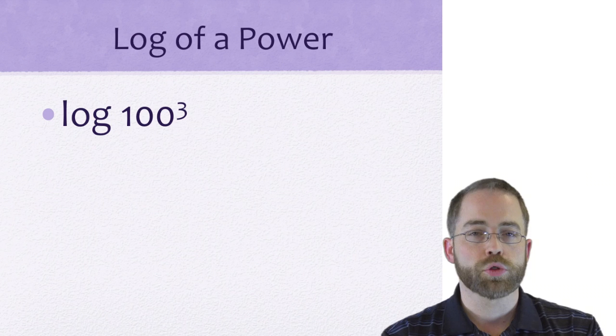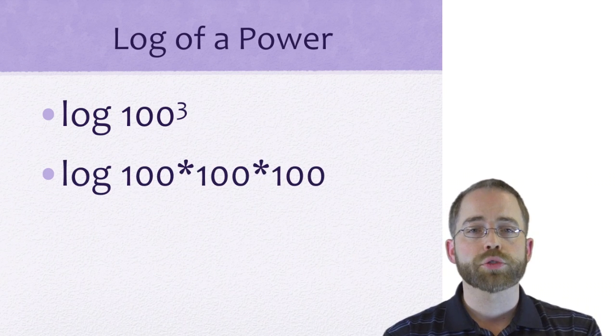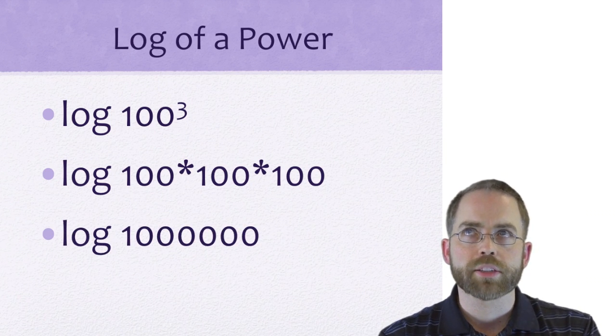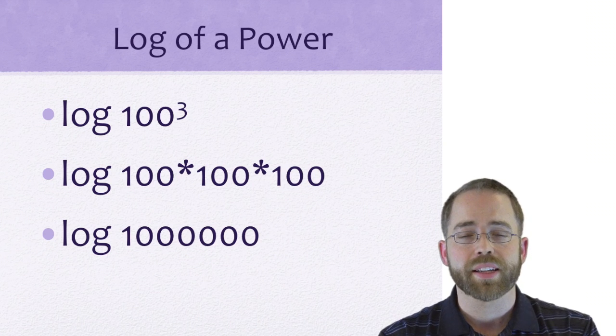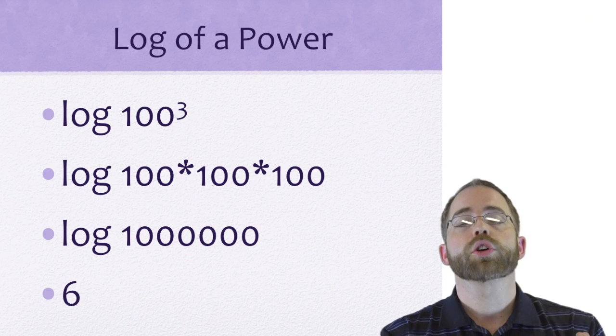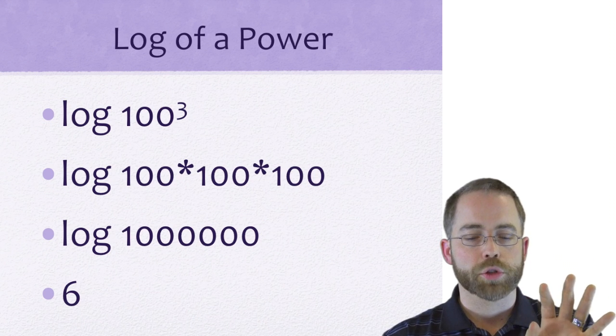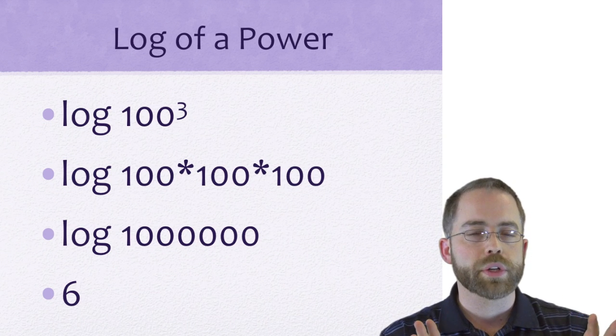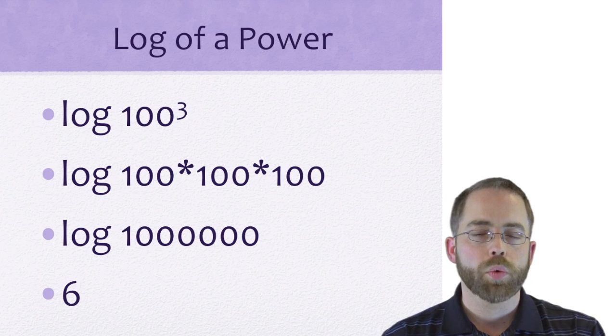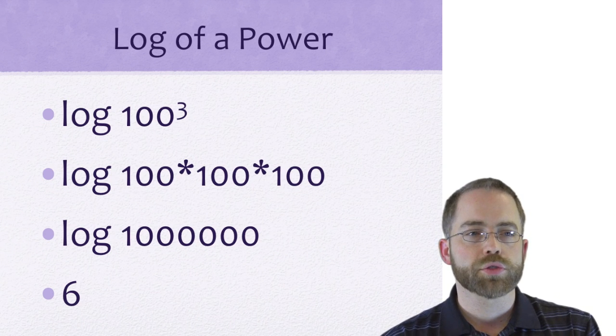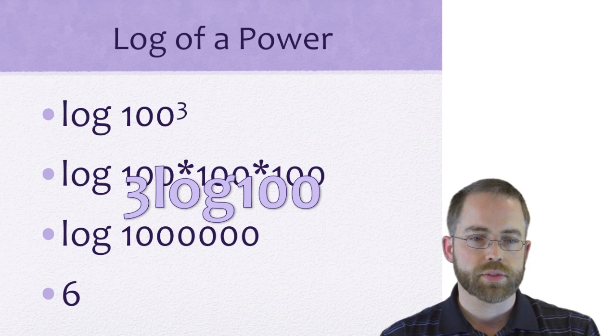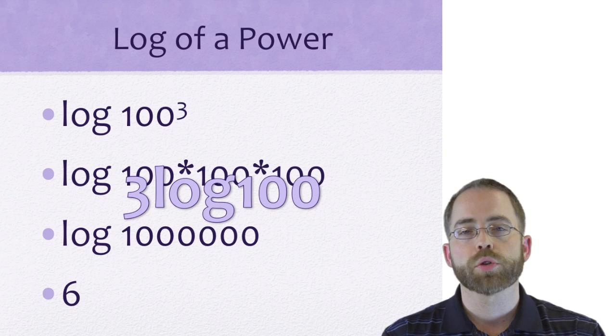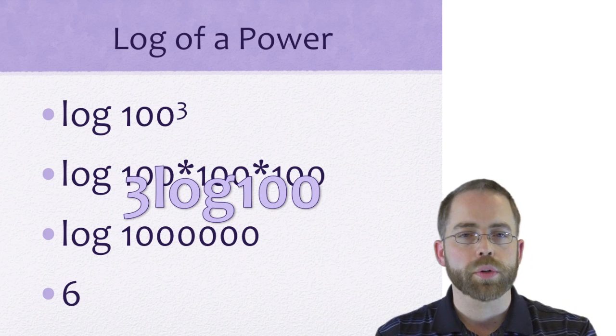All the properties of exponents that you know work with logs in the same way. If you have a log to an exponent, you could go the long way and say 100 to the 3rd is 100 times 100 times 100, which is a million. Or you could look at log 100 to the 3rd and ignore the 3 for a second. What's log 100? That's 2 times 3, which is 6.